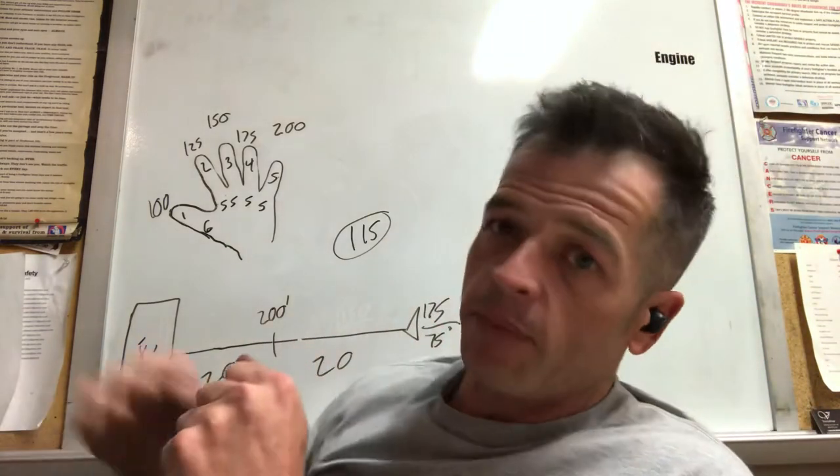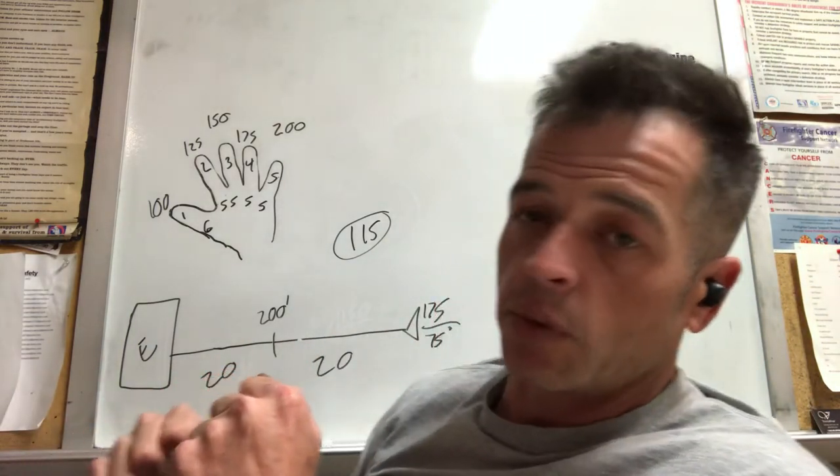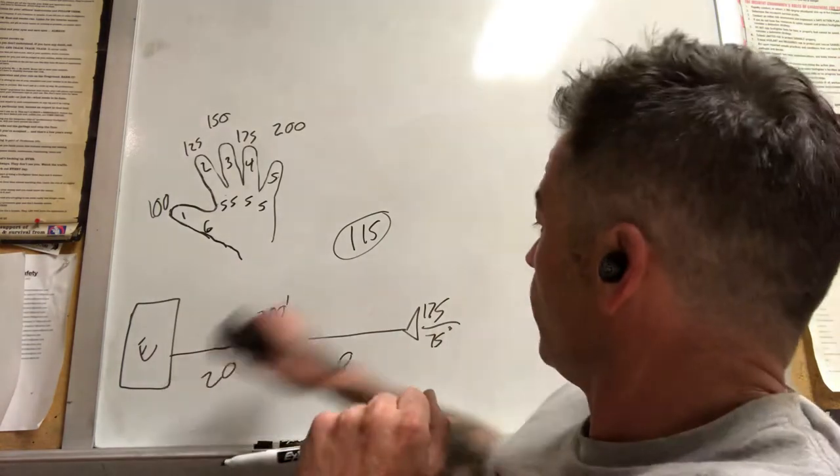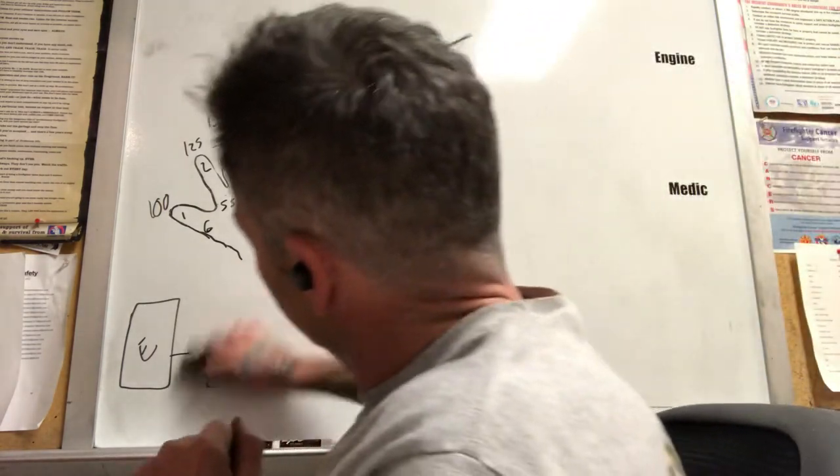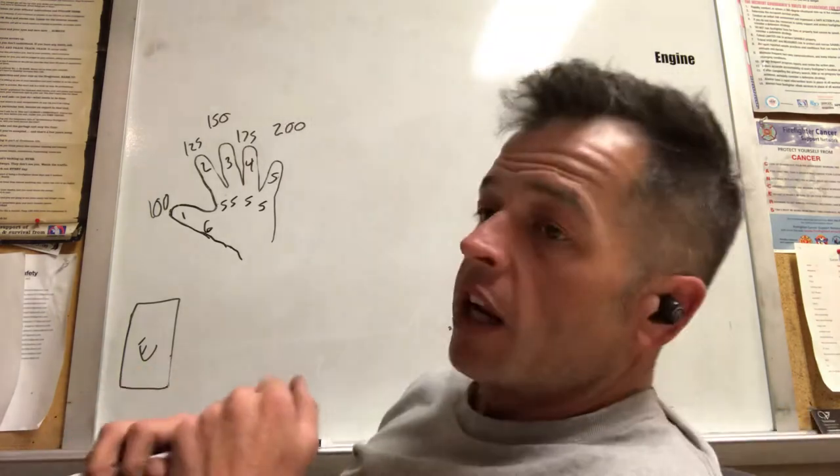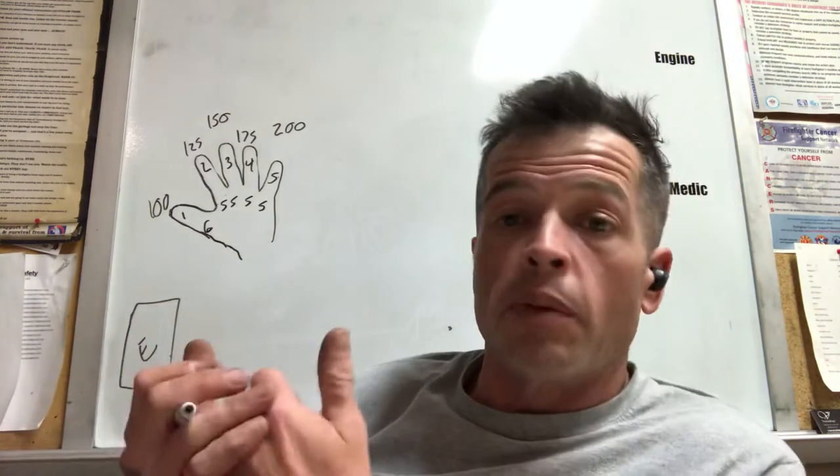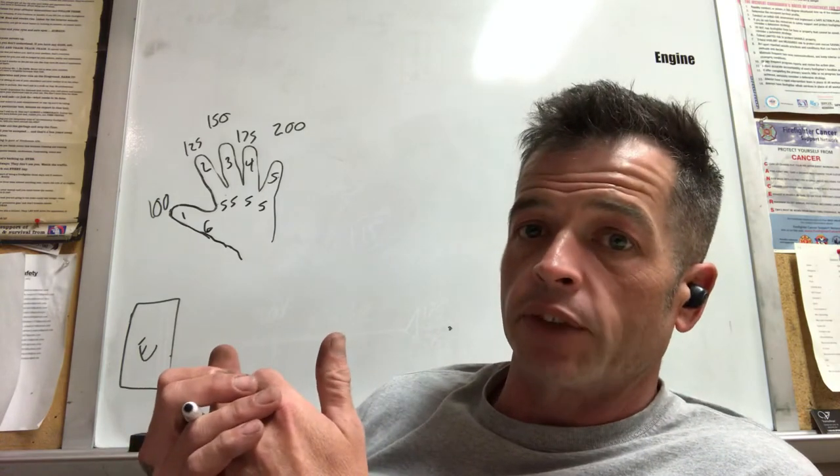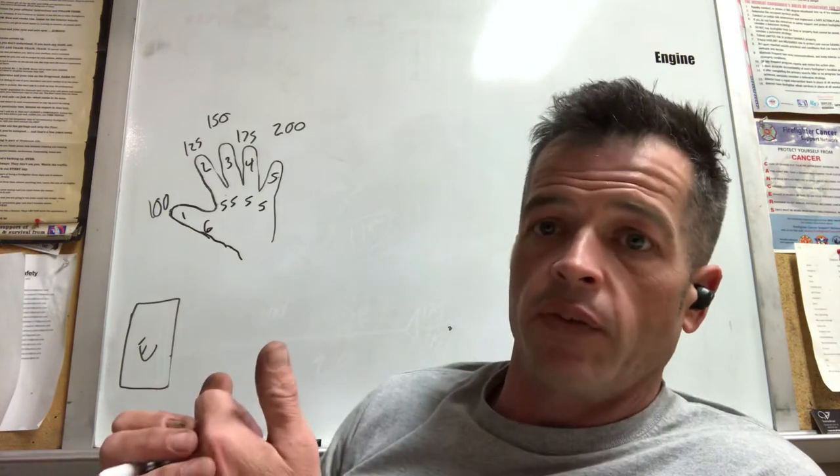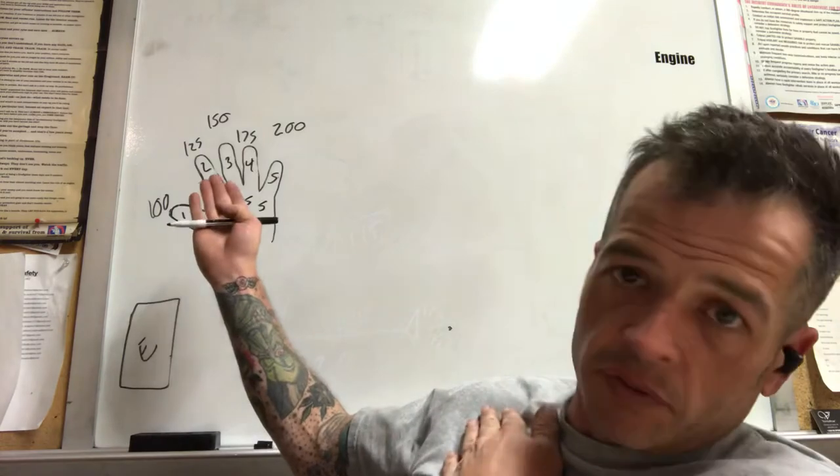Now a lot of departments, ours included, have selectable gallonless nozzles that will bump all the way up to 250 gallons per minute. Say you want to use that 250—you don't have 250 on your hand with this hand method.